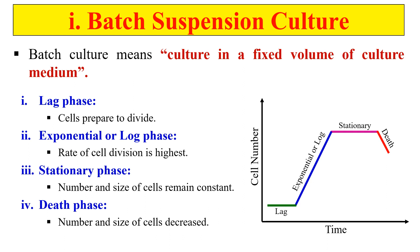After the stationary phase, cells follow the death phase. As nutrients become exhausted, cells start dying. During the death phase, both the number of cells and the size of cells decrease. This is the complete growth curve followed by cells under batch suspension culture.